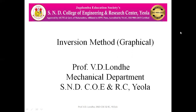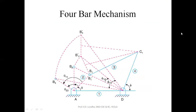The inversion method is applicable for the four-bar chain mechanism and the offset slider crank chain mechanism. For the four-bar chain mechanism, this is a graphical problem solved directly. Here link AD is fixed, link AB is the crank, link BC is the coupler, and link CD is the rocker or the output link.